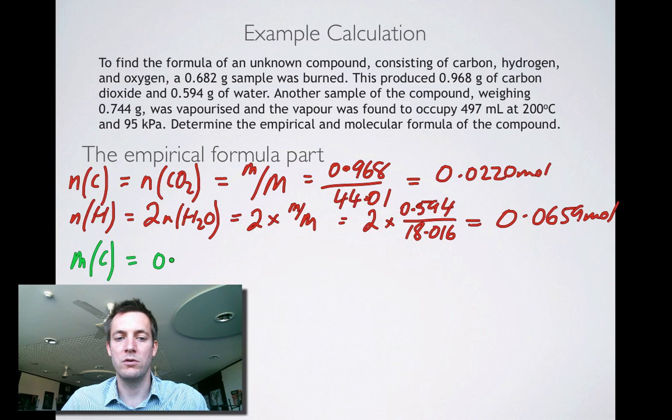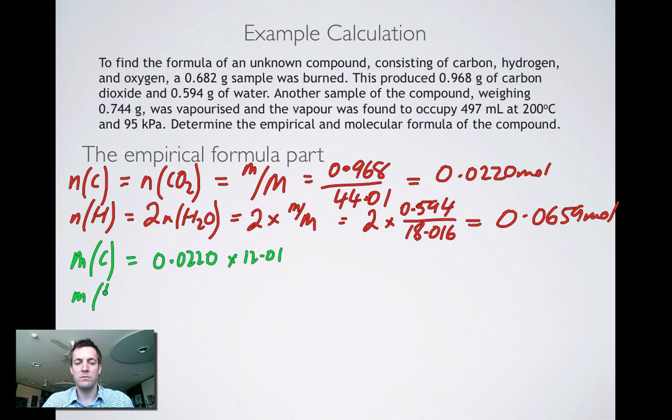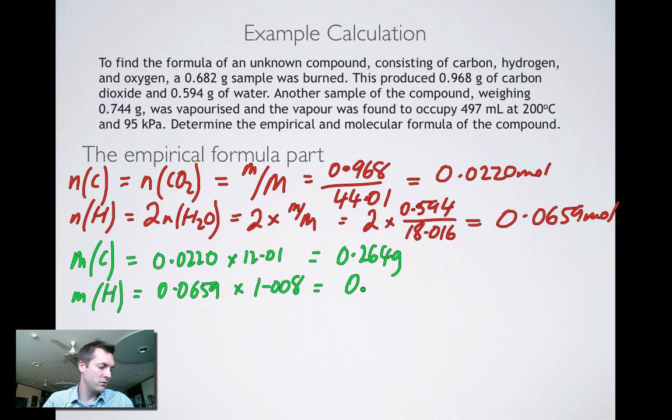So let's go ahead and find the mass of these two elements. The mass of carbon is 0.0220 multiplied by 12.01. And the mass of hydrogen, that's 0.0659 multiplied by 1.008, because the mass is N times M. So what are those two quantities? One is 0.264 grams and the other one is 0.0665 grams. And if you add those two up, you get 0.331 grams.